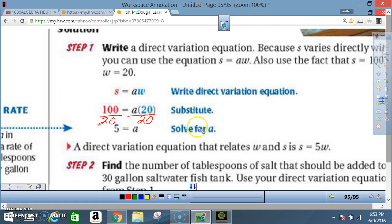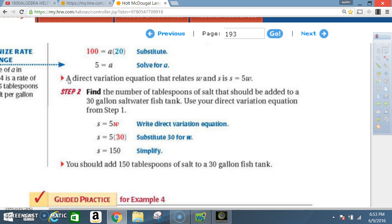Don't forget, when solving for A, that says A times 20. Opposite of multiplication is division, so you divide both sides by 20. 20 divided by 20 is 1, so you're left with just 1A. 100 divided by 20 is 5. A direct variation equation that relates W and S is S equals 5 times W.